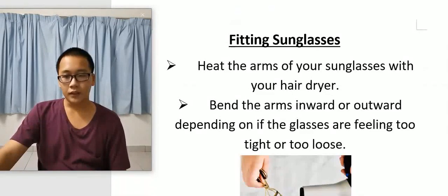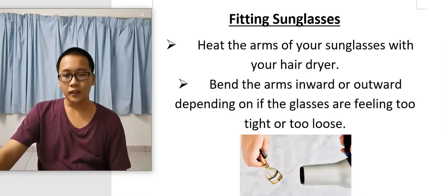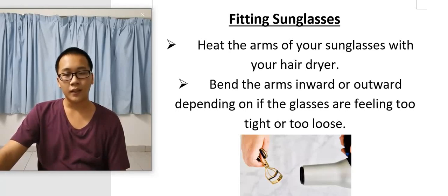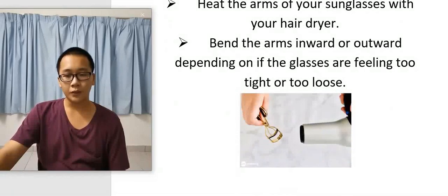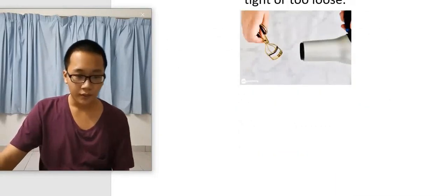Next, it's adjusting sunglasses. Heat the arm of your sunglasses up with your hair dryer to make them more flexible. Then bend the arm inward or outward depending on if the glasses are feeling too tight or too loose.